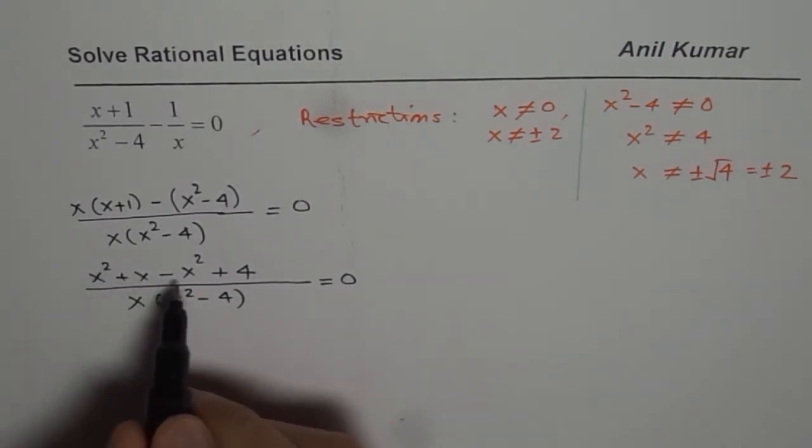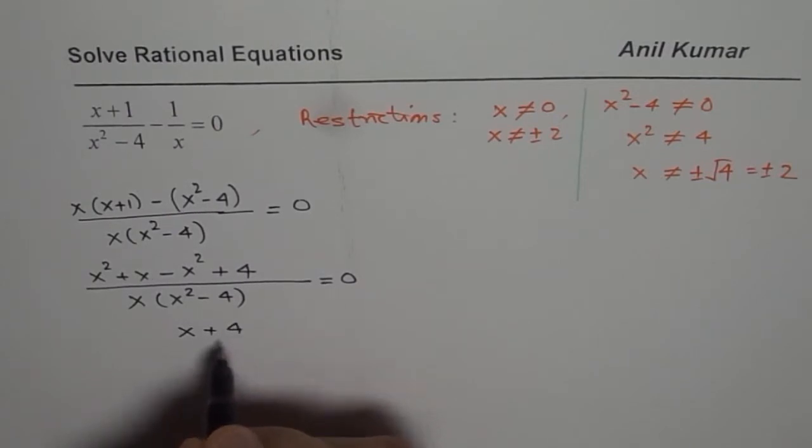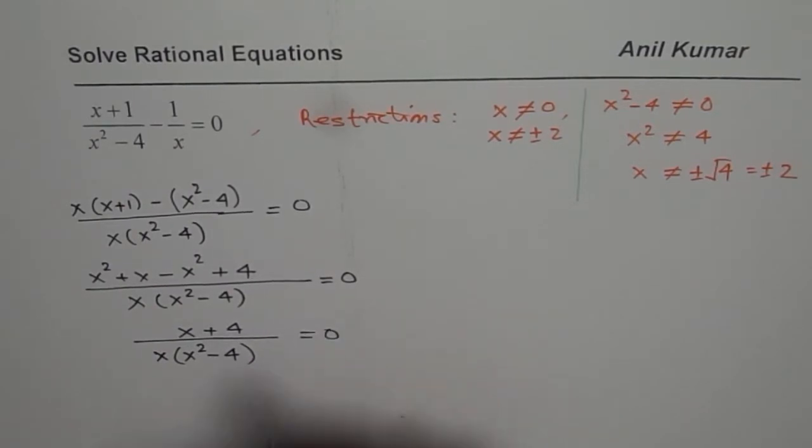In the numerator, x squared minus x squared is 0. So we are left with x plus 4. So we could write this as x plus 4 equals to x times x squared minus 4 equals to 0, right?